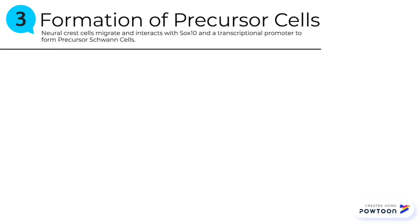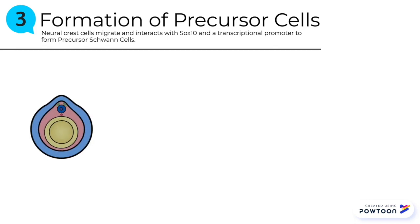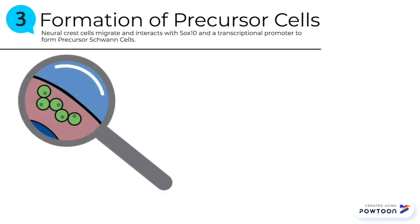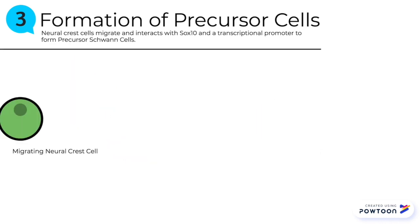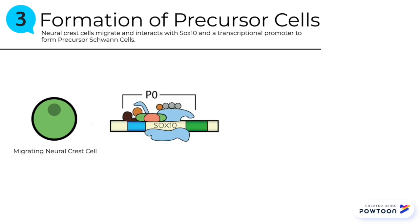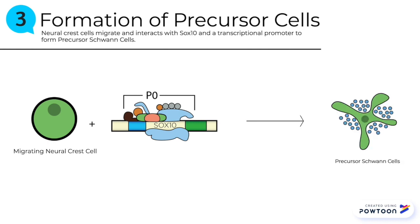The next step of this process is the formation of precursor cells, which involves neural crest cells migrating and interacting with SOX10 and a transcriptional promoter to form precursor Schwann cells. SOX10 expression is initiated in the neural crest cells as they dissociate from the neural tube. Expression is then maintained during neural crest cell migration. SOX10 then binds to the P0 transcriptional promoter, which initiates formation of precursor Schwann cells.